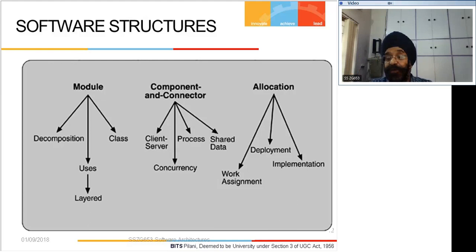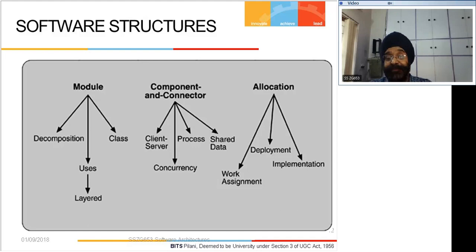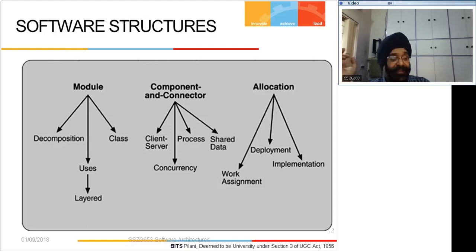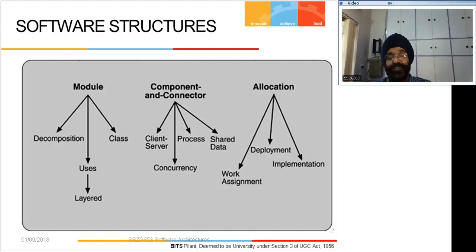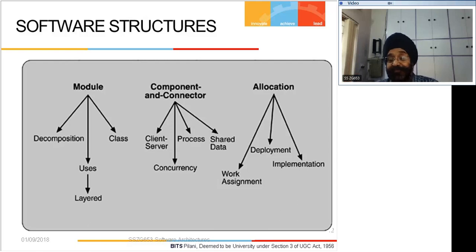Implementation plan - how do you intend to implement, where, in what sequence, in which location, and which modules get implemented in which stage - this is also an allocation structure. Work assignment - which teams are working in which organization. For example, sitting at Microsoft and allocating various components to various vendors, getting third-party testing done - this work assignment is based on the module structure and component and connector structures. That work assignment is a form of allocation structure.